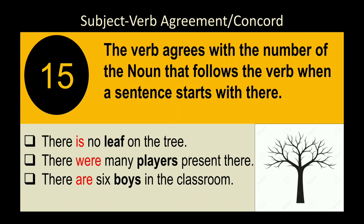Rule 17: When a sentence starts with introductory 'there,' the verb agrees with the number of the noun that follows the verb. Examples: 'There is no leaf on the tree' — 'leaf' is singular, so 'is.' 'There were many players' — 'players' is plural, so 'were.' 'There are boys' — 'boys' is plural, so 'are.'